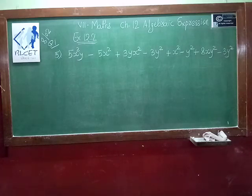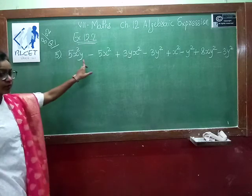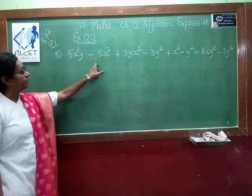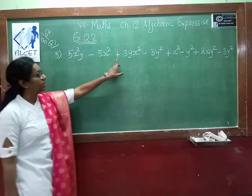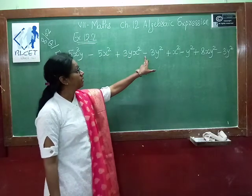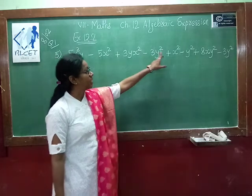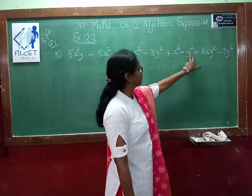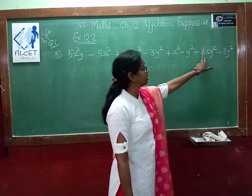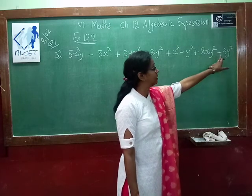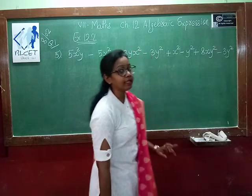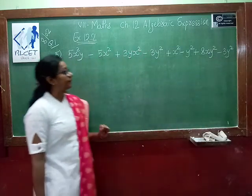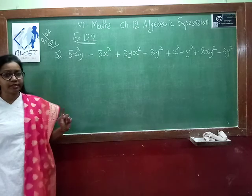Now see the fifth question. The question is 5x²y minus 5x² plus 3yx² minus 3y² plus x² minus y² plus 8xy² minus 3y². So what we have to do first?